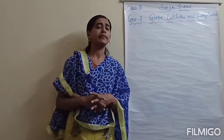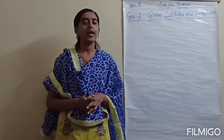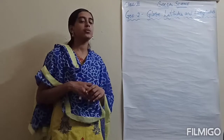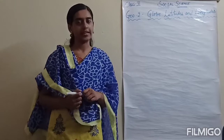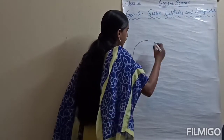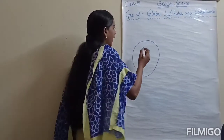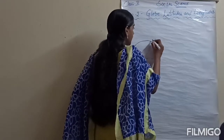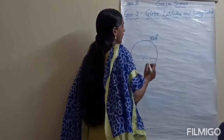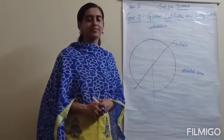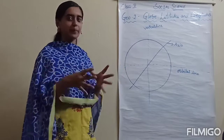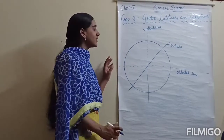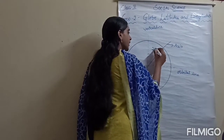We will be having many different reference points that we can use on the globe. Our Earth, when revolving around the sun, is not straight — it is tilted. It is tilted at about 23 and a half degrees. So if we draw it, we would draw something like this. This is our axis, tilted at 23 and a half degrees.